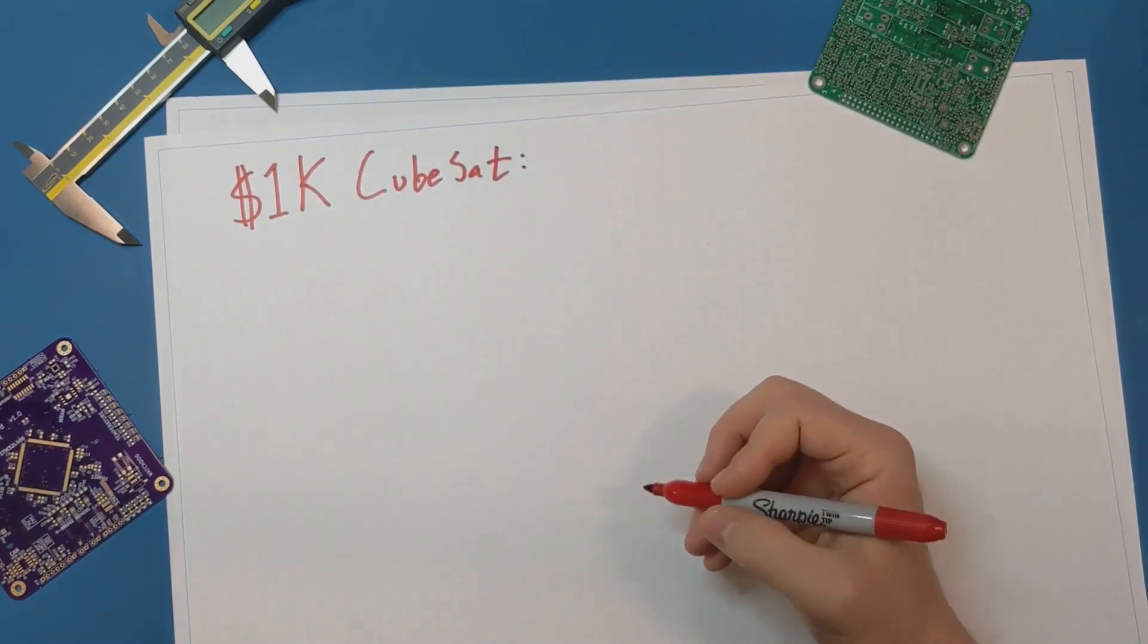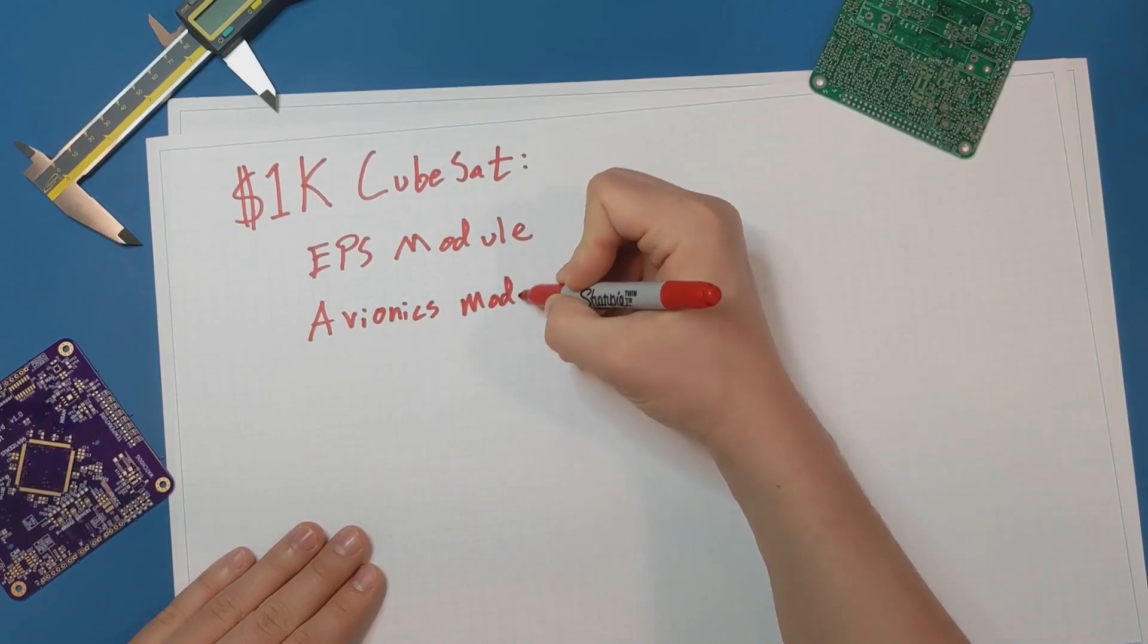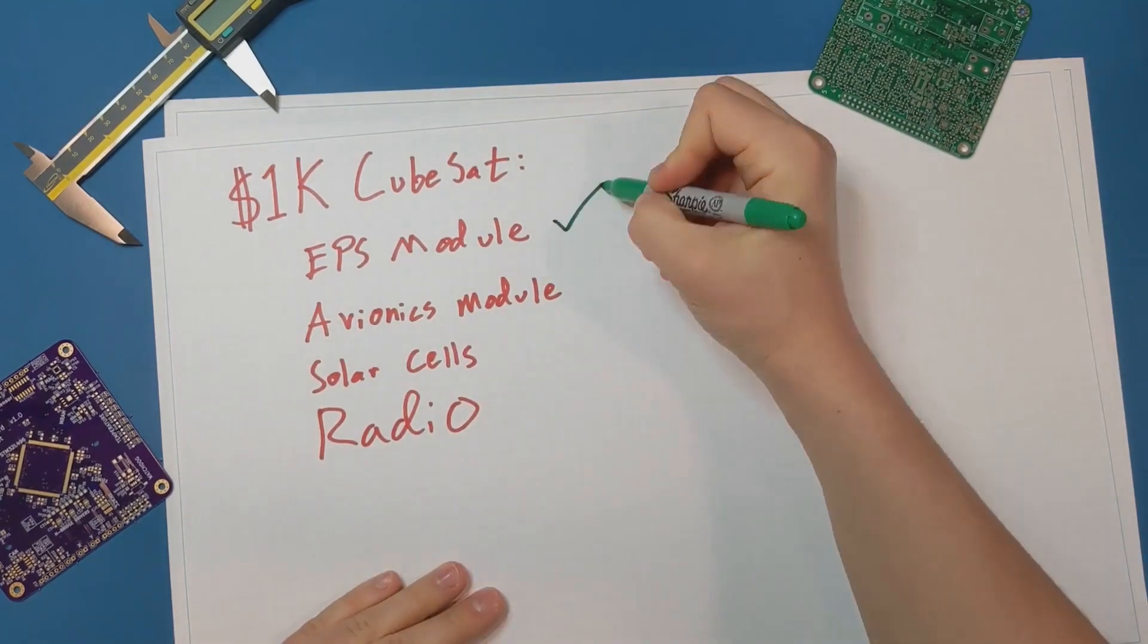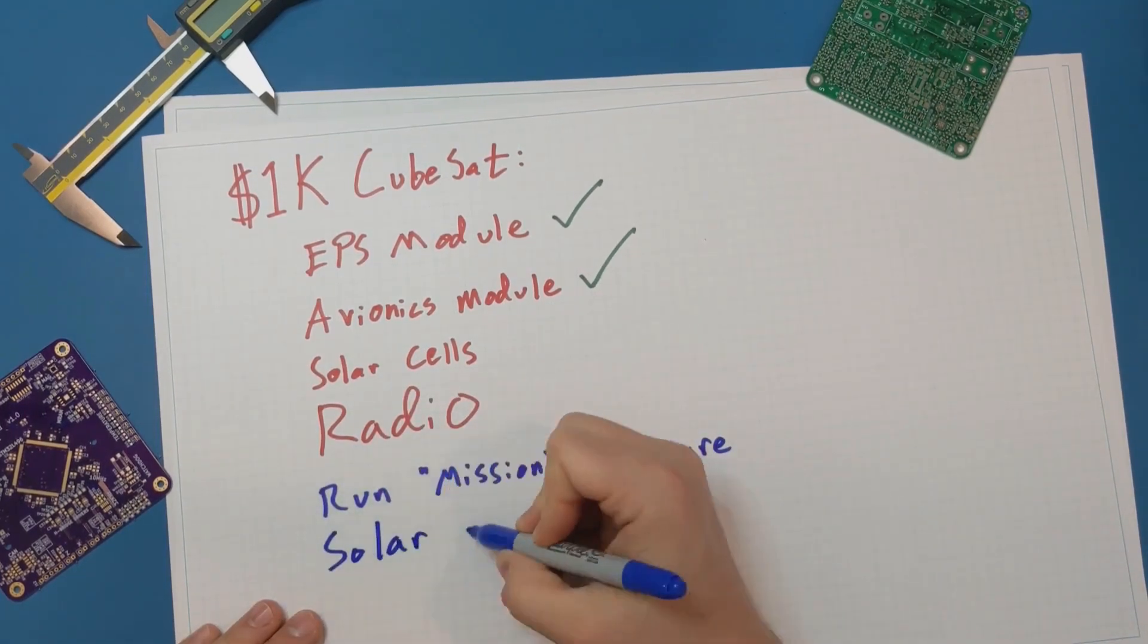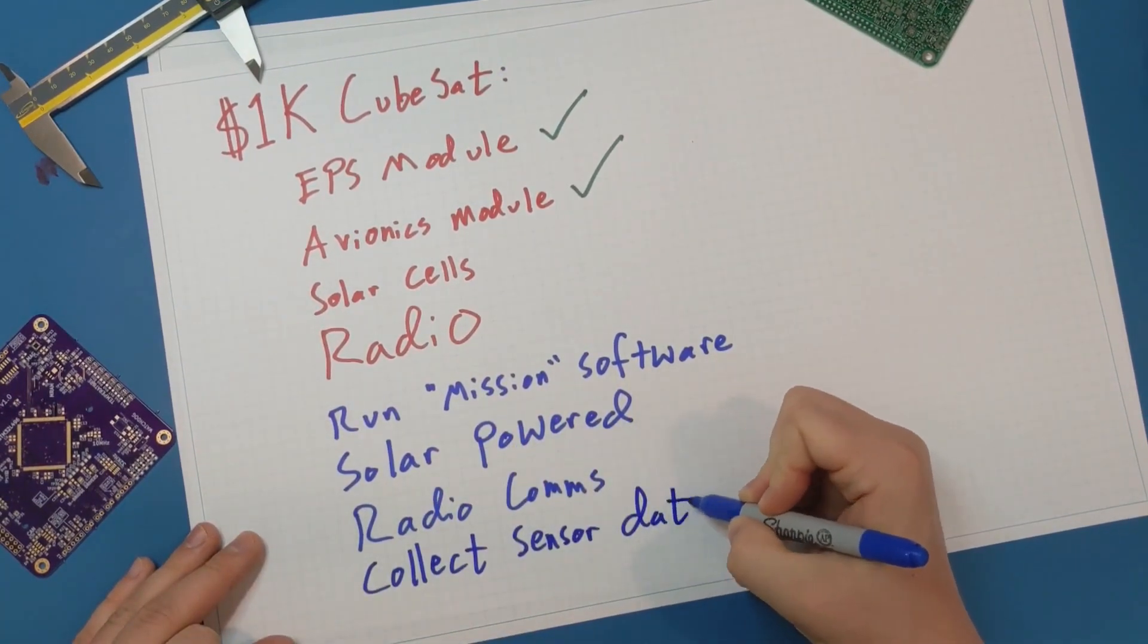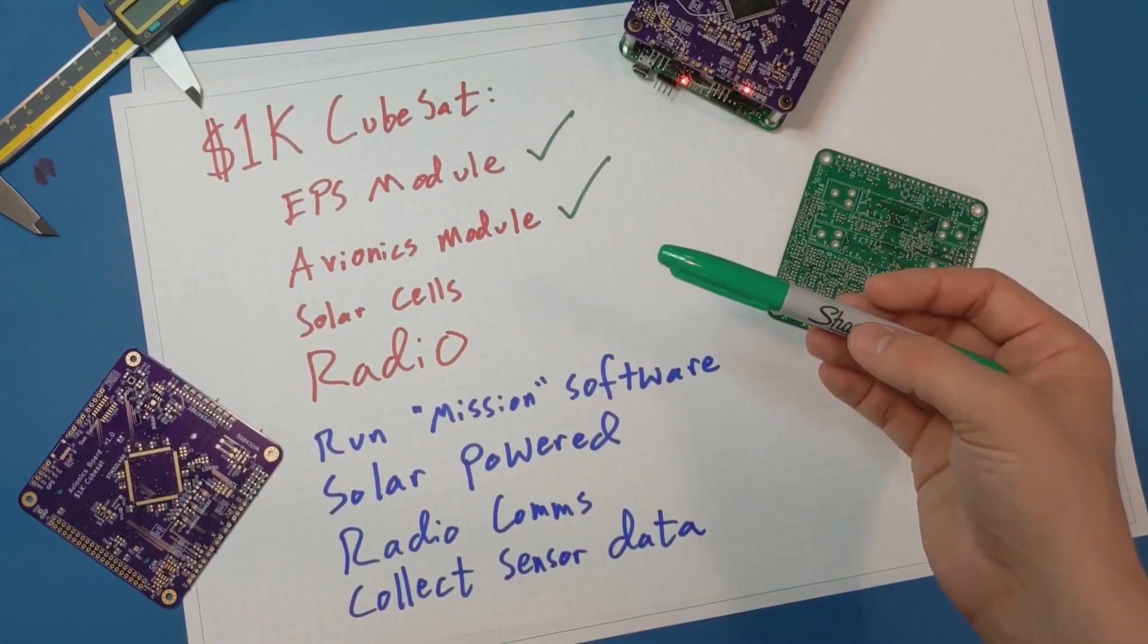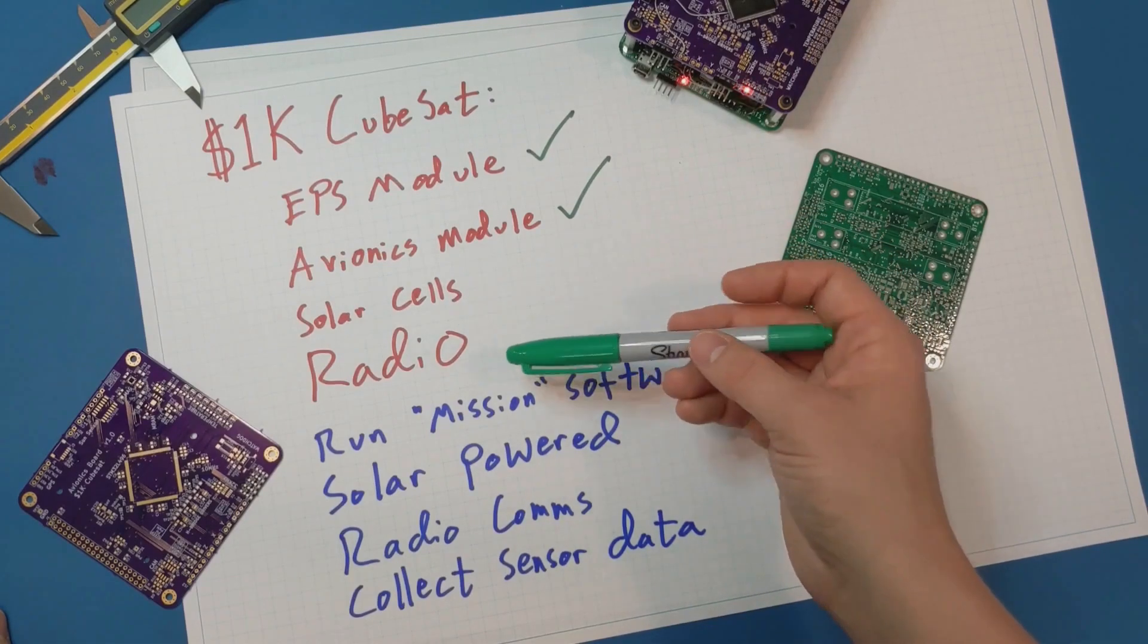So, what's left to do? These are all the components I want in a completed CubeSat. An EPS module, avionics module, radio module, and solar cells. The finished product needs enough software in order to run a mission from solar power only as it collects sensor data and communicates that data over its radio. I already have the EPS and avionics modules, so it's really just the solar cells and the radio that's left.